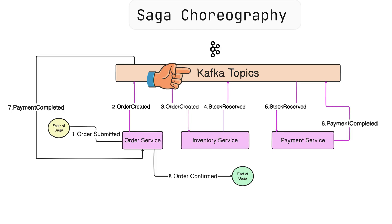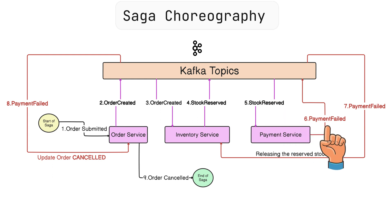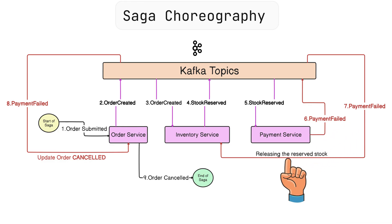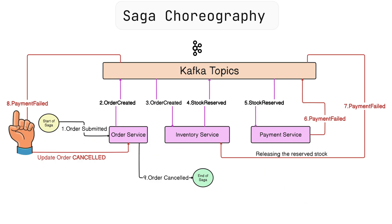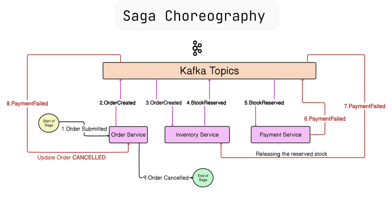Now, what if something fails? Let's say the payment itself fails. The payment service emits a payment failed event. The inventory service, listening to payment failed, responds by releasing the reserved stock. The order service is also listening to payment failed and marks the order as cancelled and notifies the user. Here, each service is responsible for its own compensating actions as no one is centrally managing the rollback — they just react to events and do their part.